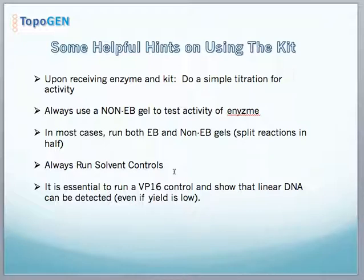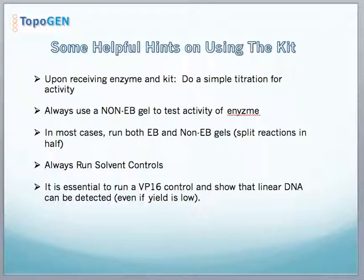Finally, it's essential to run a VP16 control to show that linear DNA can be detected. Topo II typically reseals efficiently and does not produce broken intermediates unless an interfacial poison like VP16 is present, so this control is absolutely essential. These are the key points to using our kit. If you have questions, you can send us your data and we'll be happy to go over your results and provide our input. Thank you for your time.